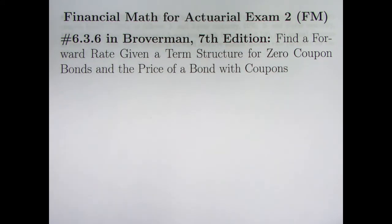We'll be finding a forward rate given two things: a term structure for zero coupon bonds and the price of a bond with coupons. It's been the last couple videos, number 144 and 145, where we've talked about forward rates and derived the formula in that last video, 145.